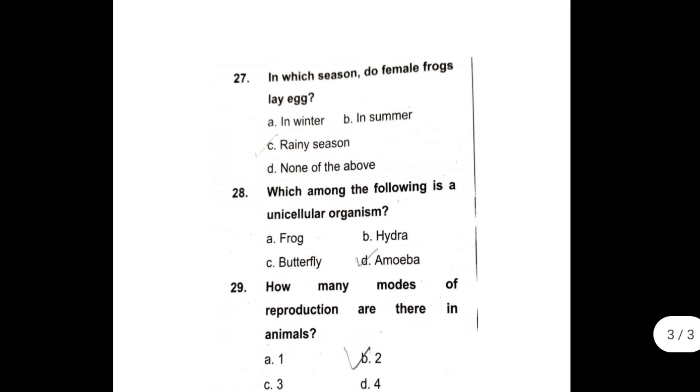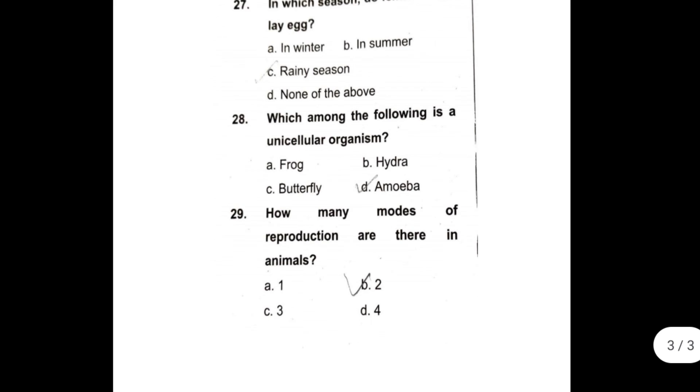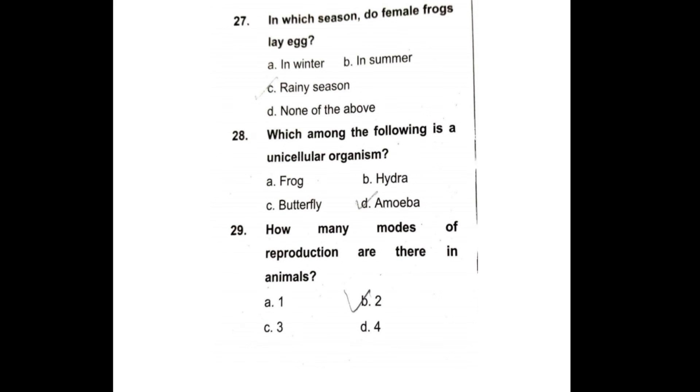Twenty-seven, in which season do female frogs lay eggs? The answer is rainy season. Twenty-eight, which among the following is a unicellular organism? The answer is amoeba. Twenty-nine, how many modes of reproduction are there in animals? The answer is two.